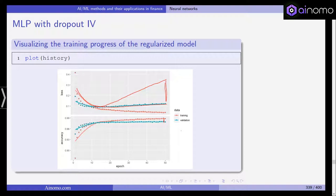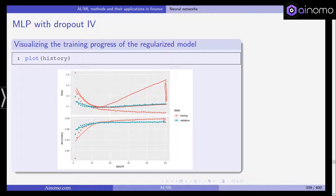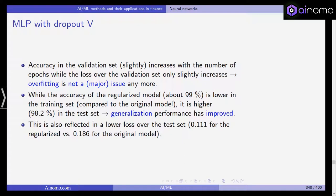Accuracy in the validation set slightly increases with the number of epochs, while the loss over the validation set only slightly increases. So overfitting is not a major issue anymore. It still increases slightly until epoch 50, but it's not a major issue as before. While the accuracy of the regularized model, about 99%, is lower in the training set compared to the original model, it is actually higher, 98.2%, in the test set. So generalization performance has improved.